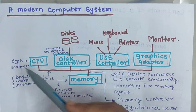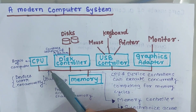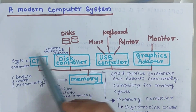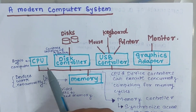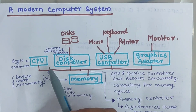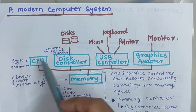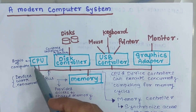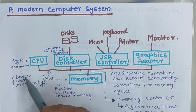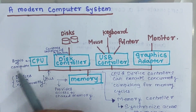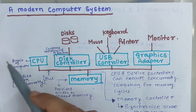CPU is the heart of the computer system. CPU is also called as the brain of a computer system, and CPU performs various operations like computations, storing of data, and holding the data temporarily.